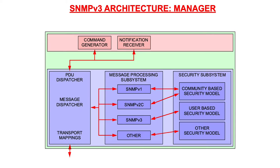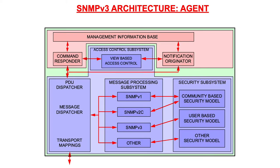The message processing subsystem selects whether to use SNMP version 1, version 2c, or version 3 encoding. In the case of version 1 and version 2c, it uses the community-based security model, and for version 3 the user-based security model is used. The agent looks quite similar, except that the application includes a command responder and notification originator. The SNMP agent application also contains the management information base. To allow different managers to access different parts of the MIB, the access control subsystem is used to limit access.